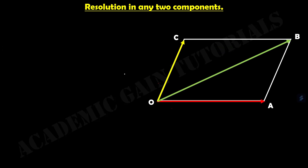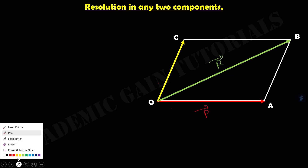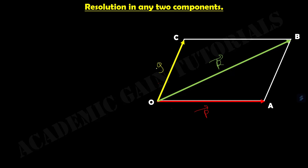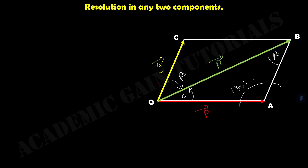Now, Resolution into any two components. We will find out the value of the components — how we can calculate the value of components. This is our original vector r, this is our vector p, and this is our vector q. Now, q makes an angle of beta with r, and p makes an angle of alpha with r. Since O, A, B, C is a parallelogram, this angle will also be beta.